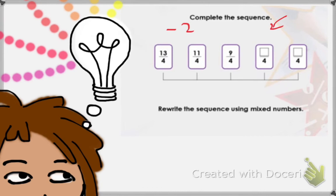We take away 2 each time: 13 take away 2 is 11; 11 take away 2 is 9; 9 take away 2 is 7; and 7 take away 2 is 5. Now we have our complete sequence. We can rewrite the sequence using mixed numbers.